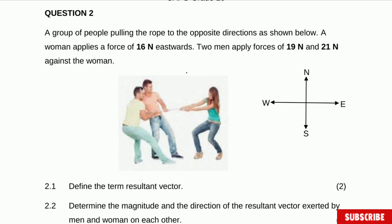So let's do the following. We have a rope, this dot will represent the rope, and then on that specific rope there is a force being applied to the east which is 16 newton by that woman. However, they say two men apply forces of 19 and 21 against the woman.